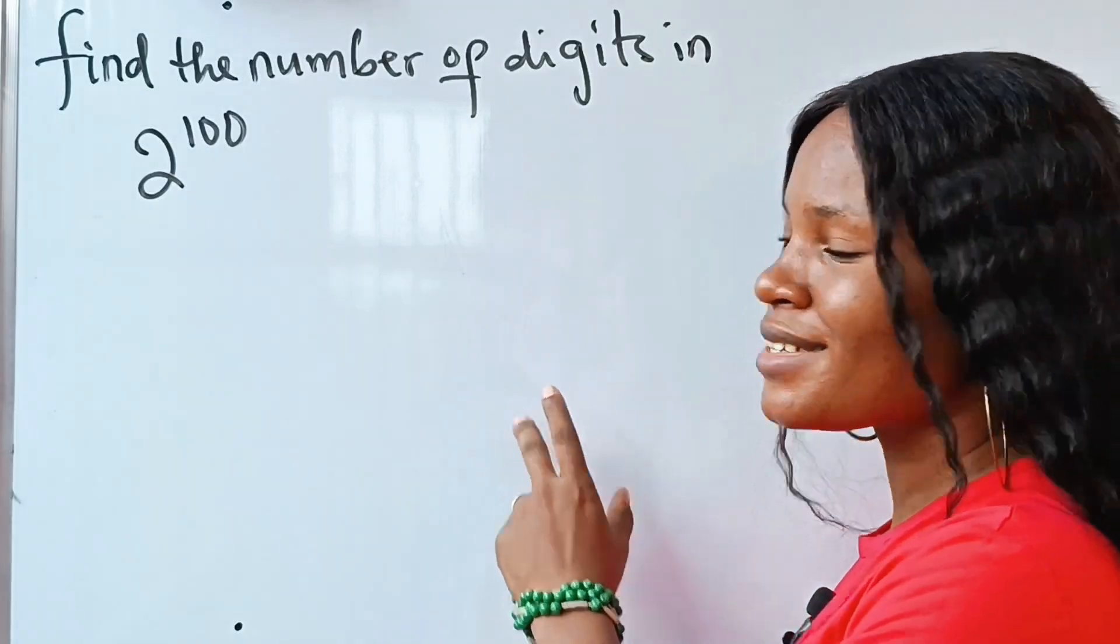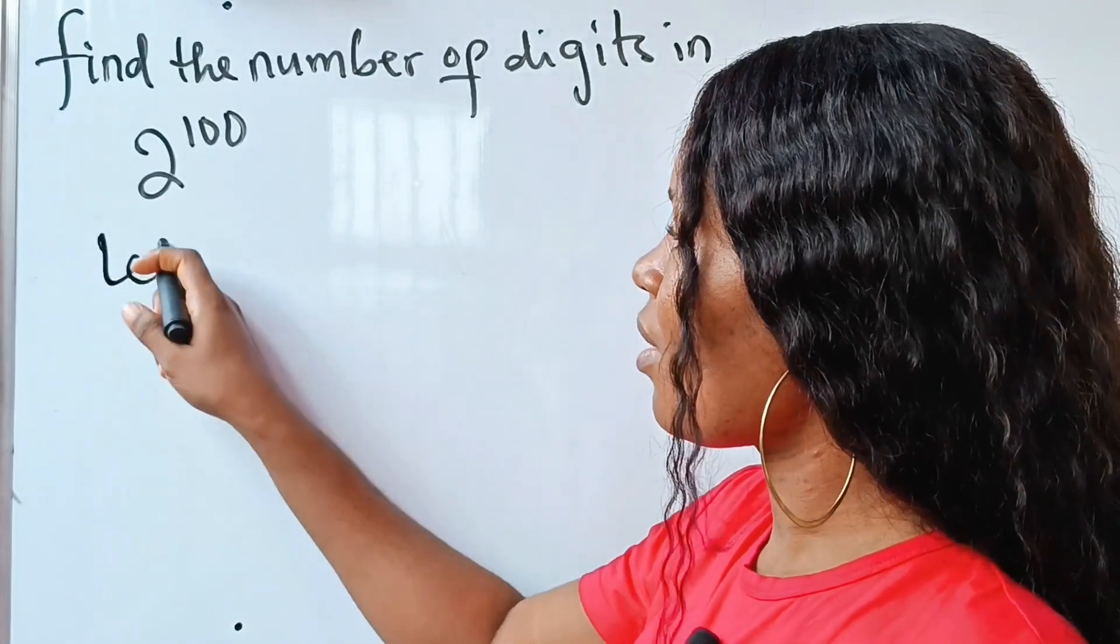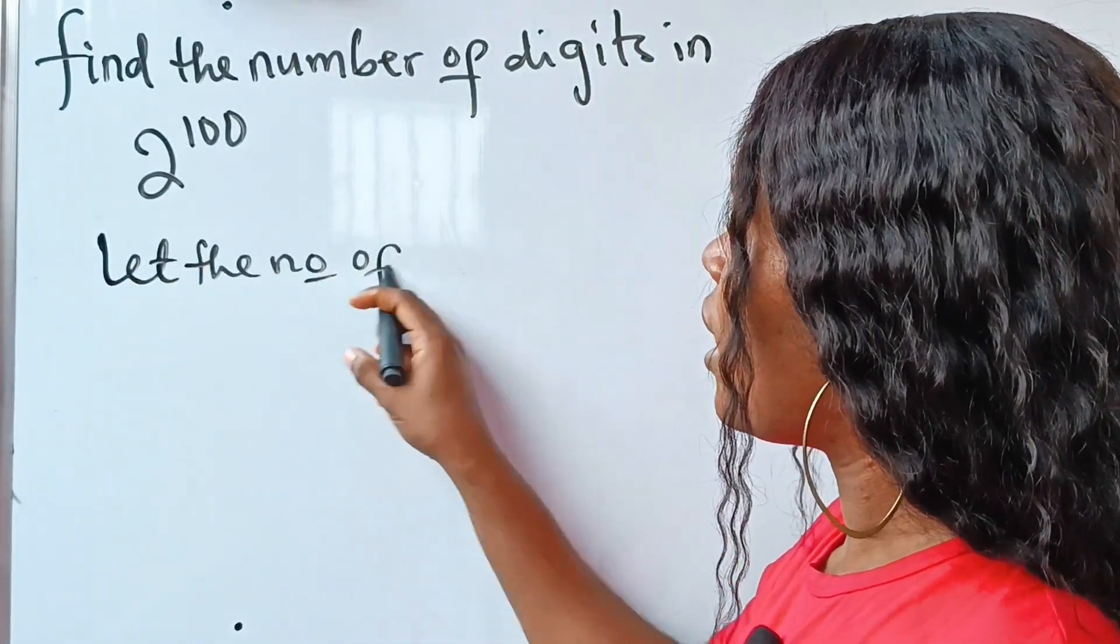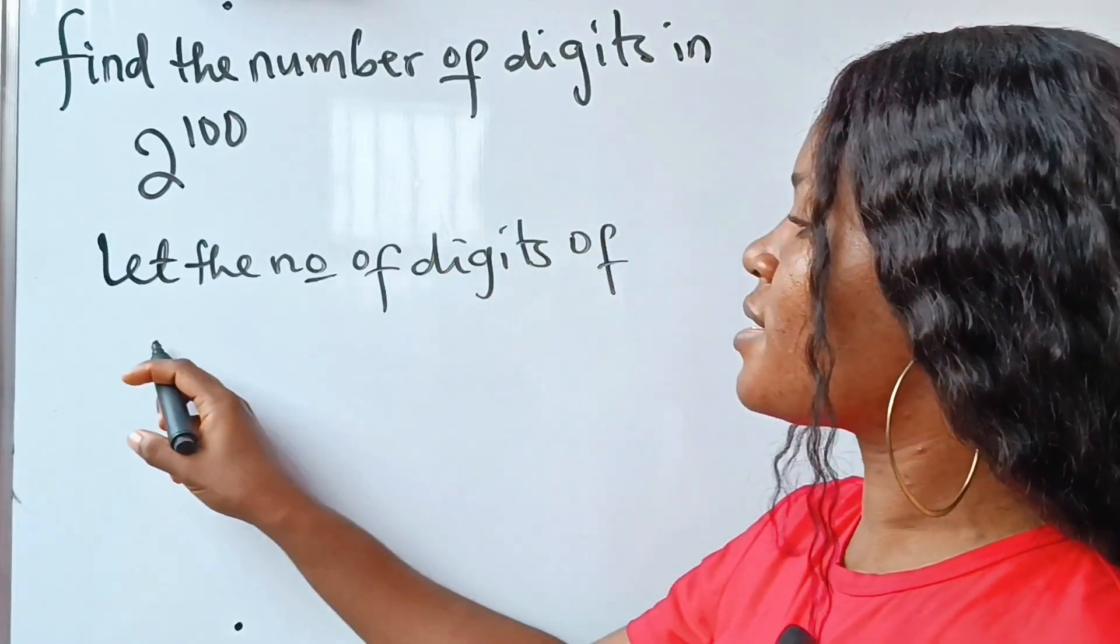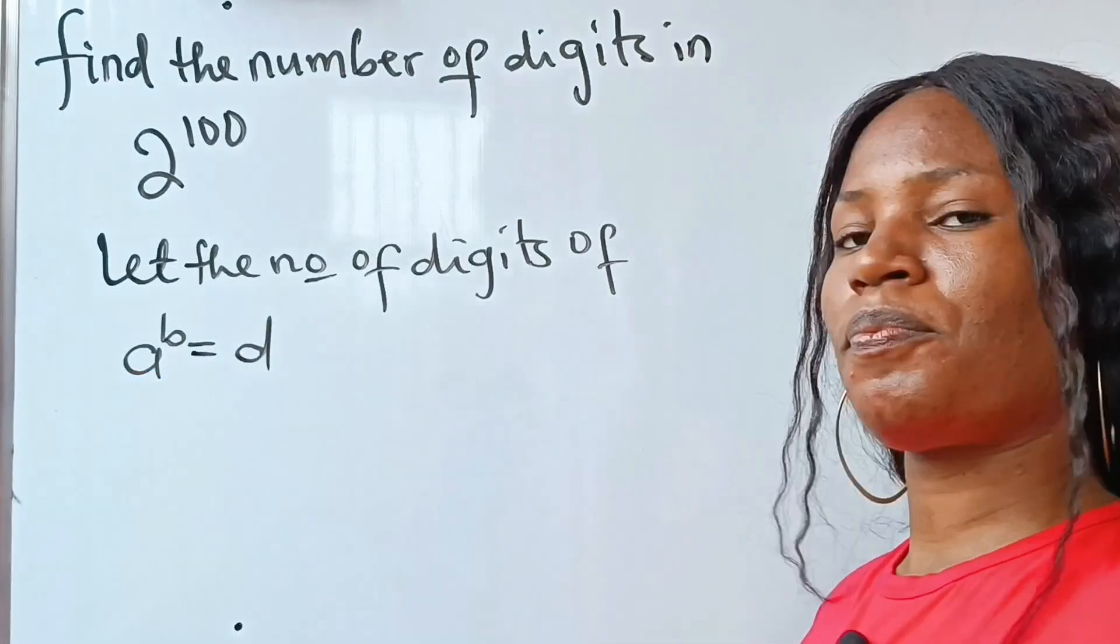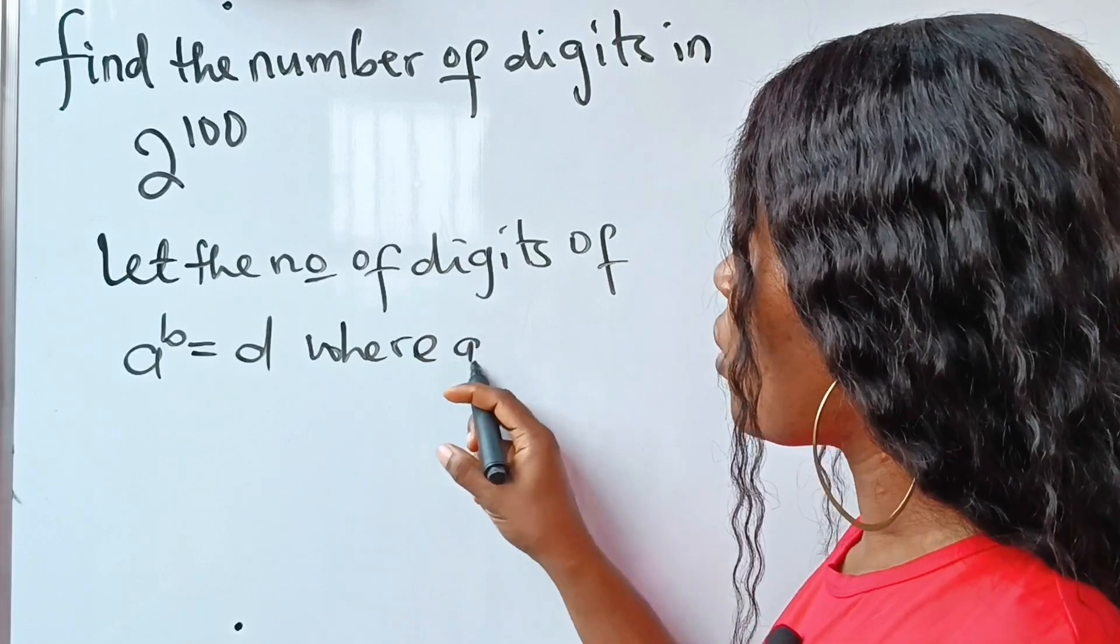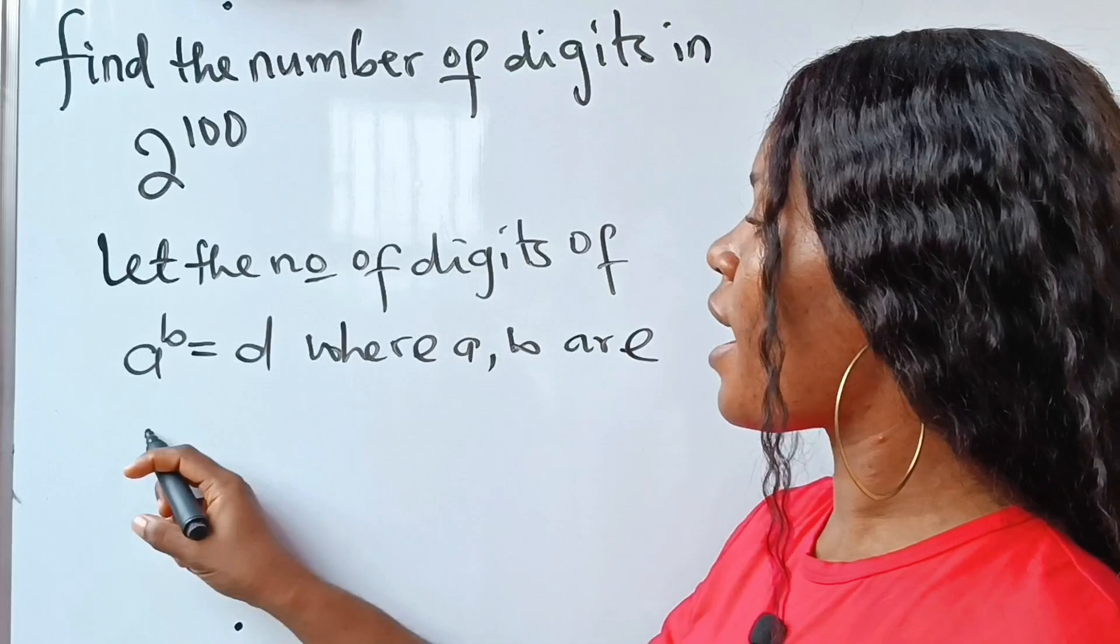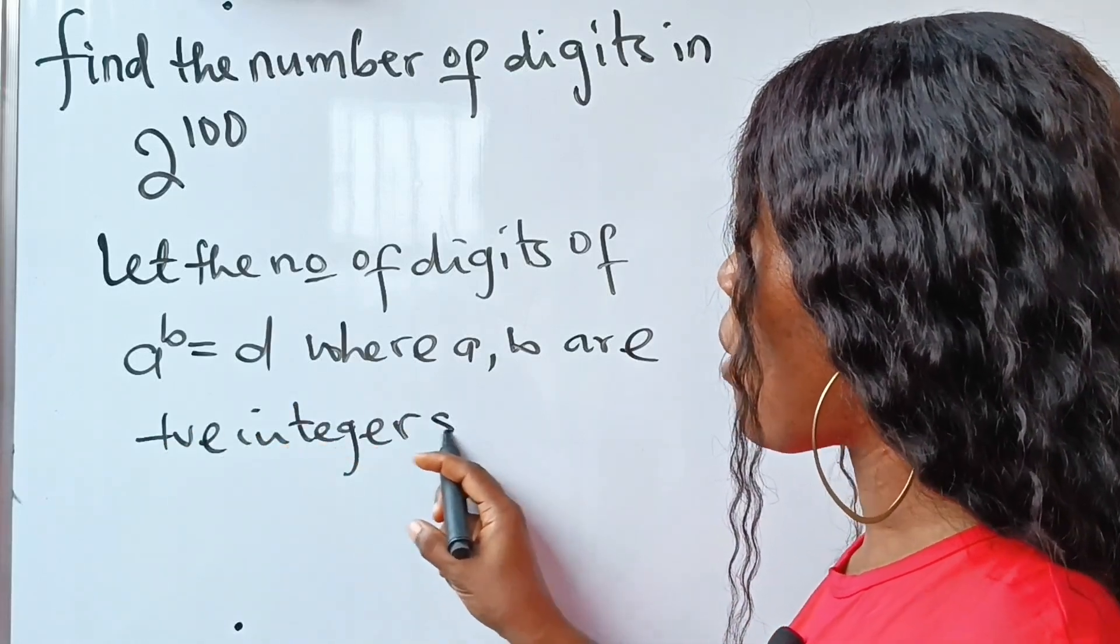Let the number of digits of a to the power of b be equal to d, where your a and your b are positive integers. Now if this is the case, let's establish the formula.